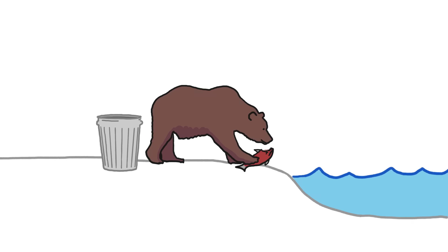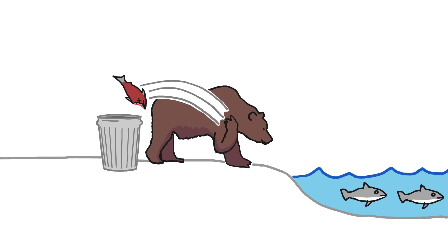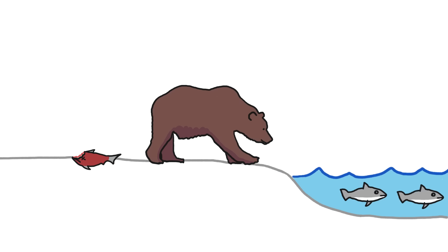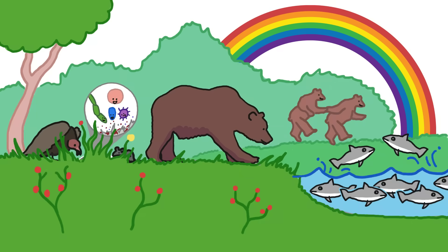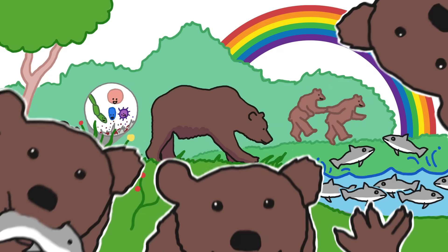And even when a bear decides that a salmon in the paw isn't worth two in the stream, that fish doesn't actually go to waste. The discarded meat gets picked over by other animals, and whatever's left over is decomposed by even smaller critters, creating a nutrient-rich landscape that can bear even more bears.